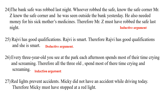Now we come to the 27th. Red lights prevent accidents. Mickey did not have an accident while driving today; therefore Mickey must have stopped at a red light. It is not necessary — he might not have got the signal either. So these evidences are not sufficient to say that he stopped at a red light. This argument is of inductive type.